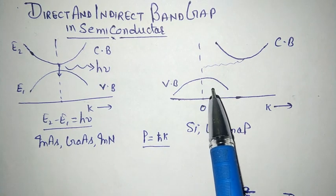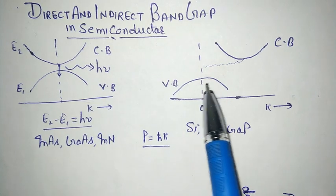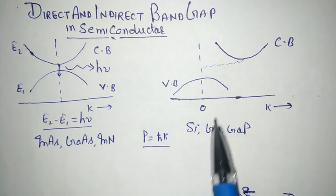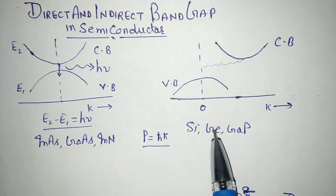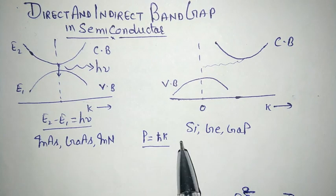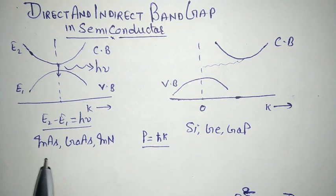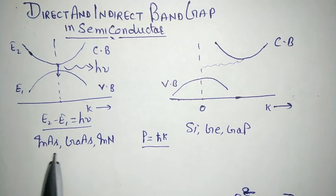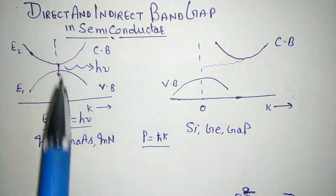Therefore there is no radiation in the form of light, and this is known as an indirect band gap semiconductor. Examples of indirect band gap semiconductors are silicon, germanium, and gallium phosphide, while gallium arsenide and indium arsenide are direct band gap semiconductors.